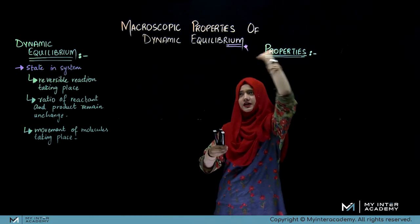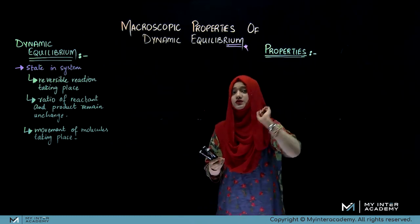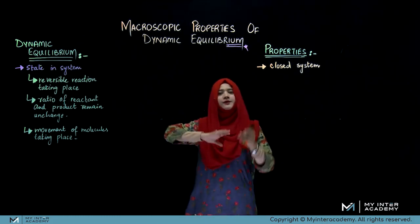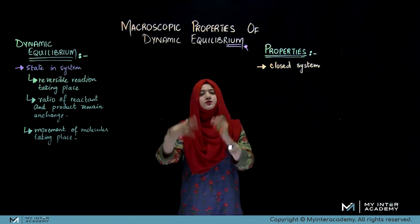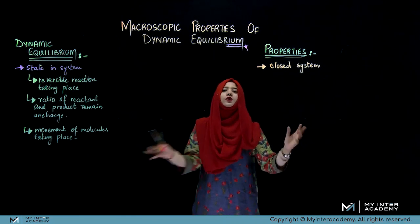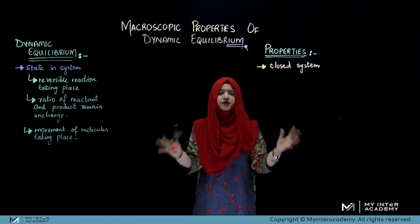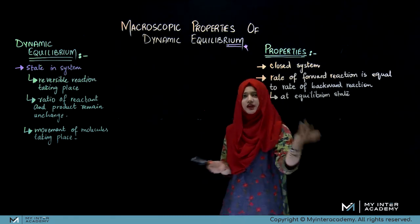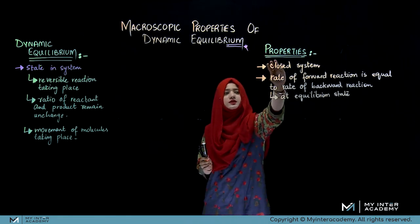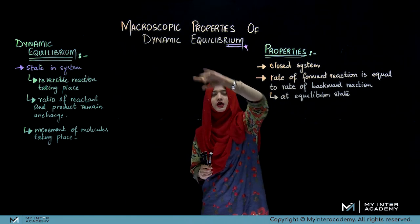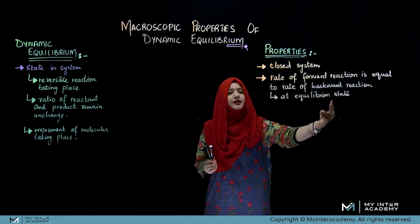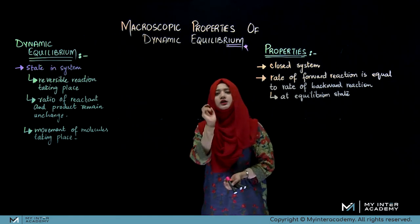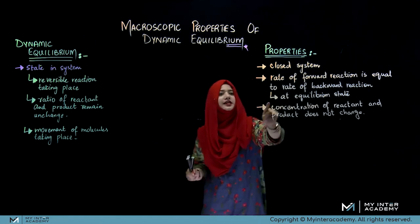In dynamic equilibrium, a closed system is required — that is a key property. The next property is that dynamic equilibrium involves reversible reactions. We say that the rate of the forward reaction and the rate of the backward reaction are equal at the equilibrium state.